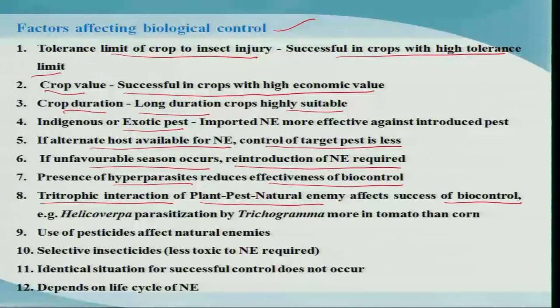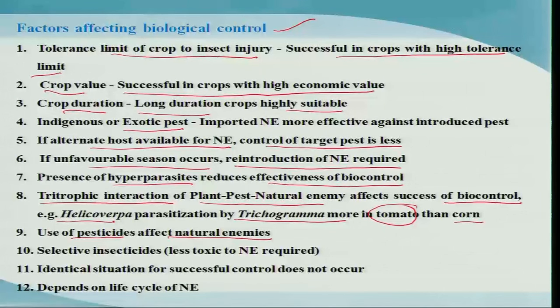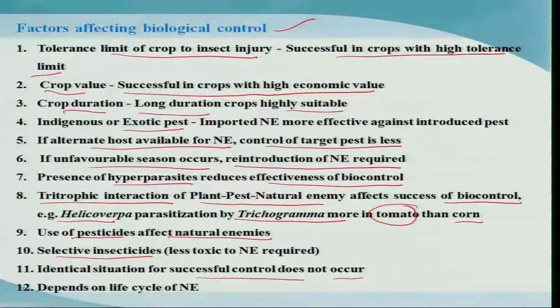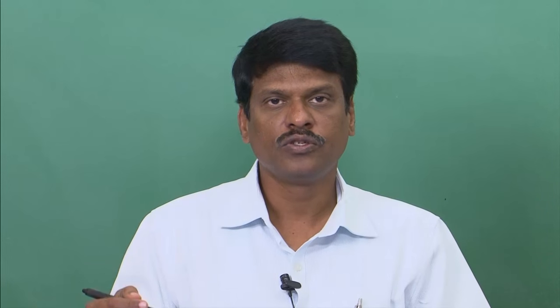For example, Trichogramma released as an egg parasitoid against Helicoverpa works very well in a tomato ecosystem compared to a corn ecosystem. The use of pesticides can affect natural enemies and suppress their multiplication, so selective insecticides are needed. Also, identical situations for successful control do not always recur — if a biocontrol program is successful in one region, we cannot expect it to be successful in all regions. Success mainly depends on many abiotic and biotic factors.